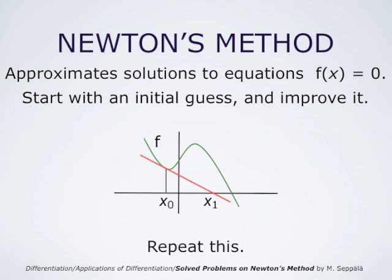We may repeat this. Starting from the point x1 on the x-axis, we go up to the point (x1, f(x1)), and we draw the corresponding line tangent to the graph of f at that point. This line intersects the x-axis at the point x2, which is our next approximation of the solution of the equation f of x equals 0.